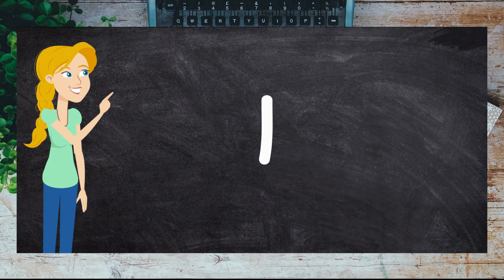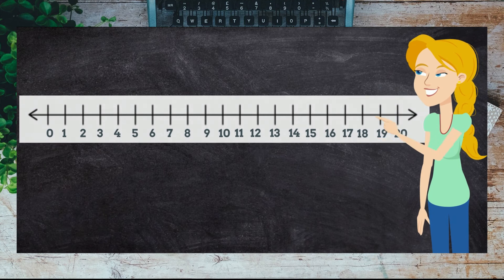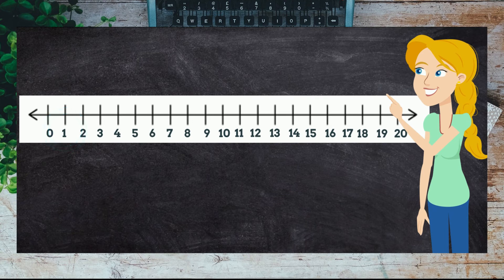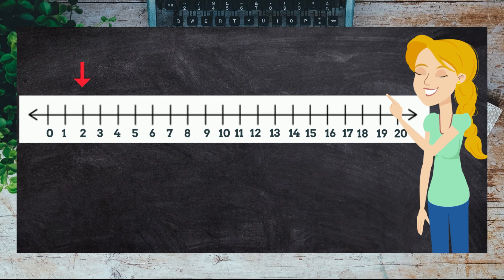Can you see the number one on this number line? Great! Do you know what number comes after the number one? That's right, it's two.